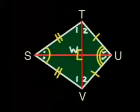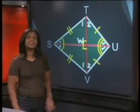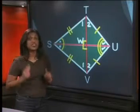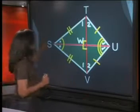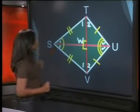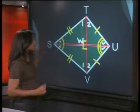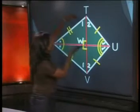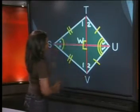That's what we wanted. The diagonals must intersect at right angles. So here's another bit of information that we can use from knowing that triangle STW is congruent to triangle SVW.